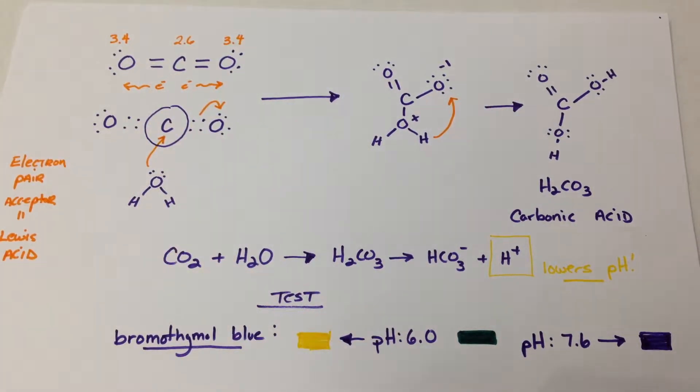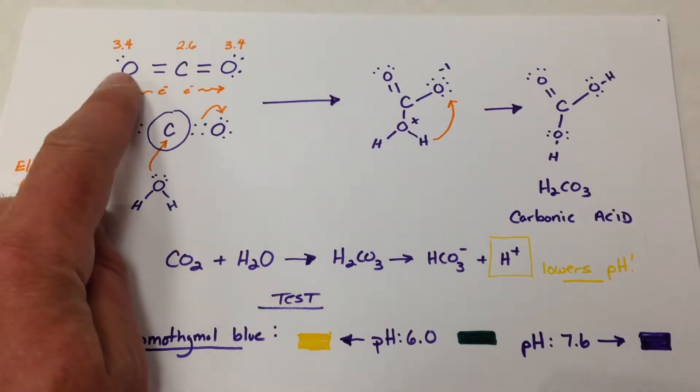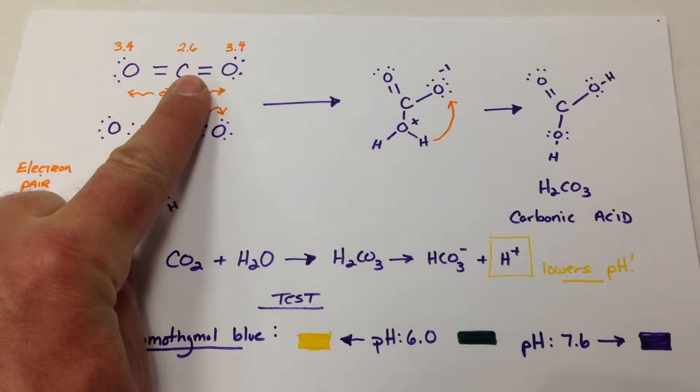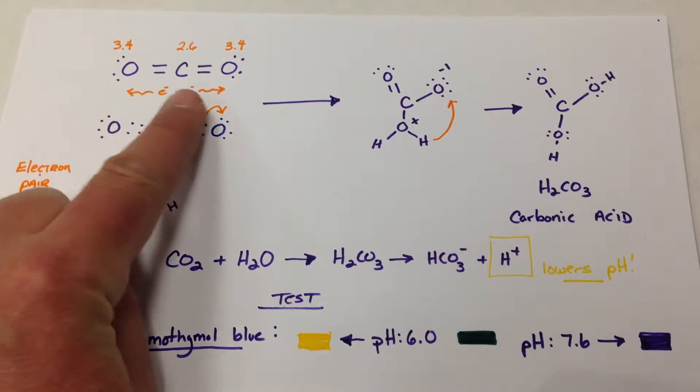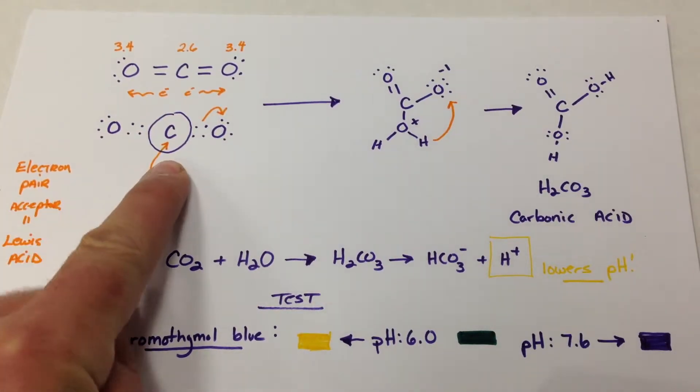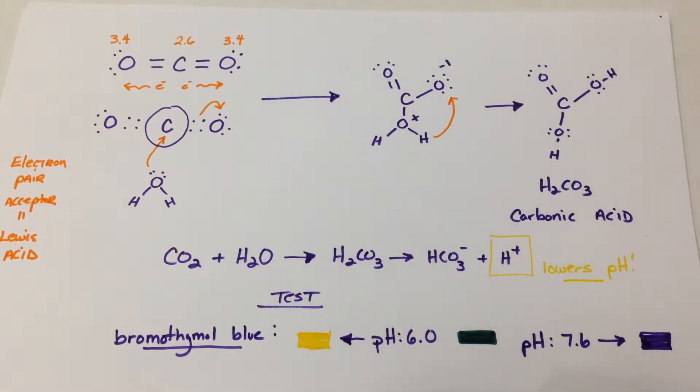But very interestingly, if you look very carefully, the oxygen is much more electronegative than the carbon, so that pair of electrons are drifted or pulled to the oxygen, which leaves this carbon somewhat electron-loving or somewhat positive.